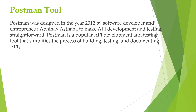Postman is an API testing tool. An API acts like an interface between a couple of applications and establishes a connection between them. Thus an API is a collection of agreements, functions, and tools that an application can provide to its users for successful communication with another application.